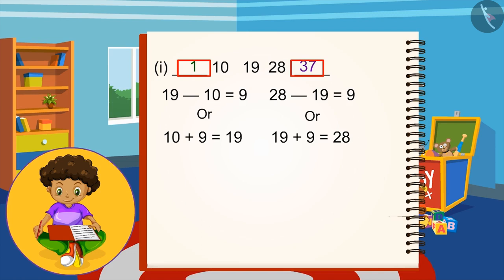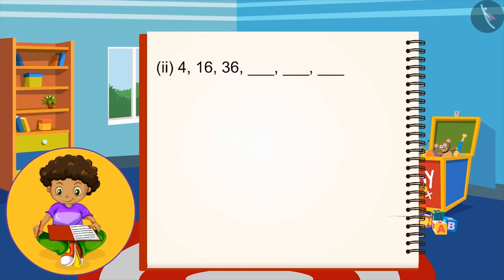Poltu has filled the second blank. Is this answer correct? Yes, 28 plus 9 is 37. Let's now check the next pattern of Poltu. Here are some numbers. Poltu is wondering what the next number will be. Let's find the rule of this pattern.